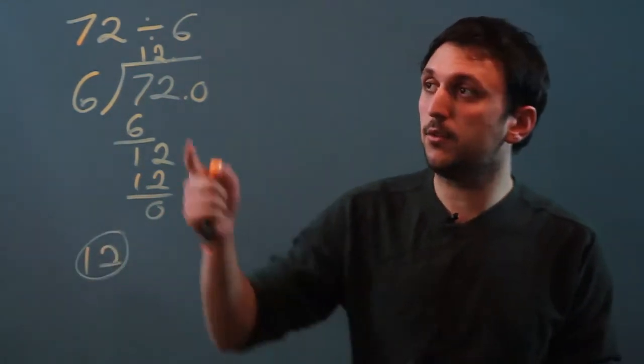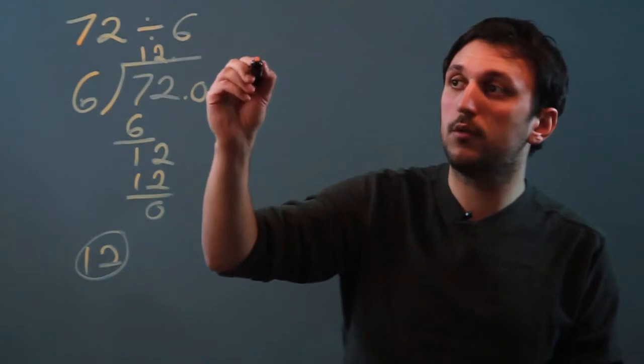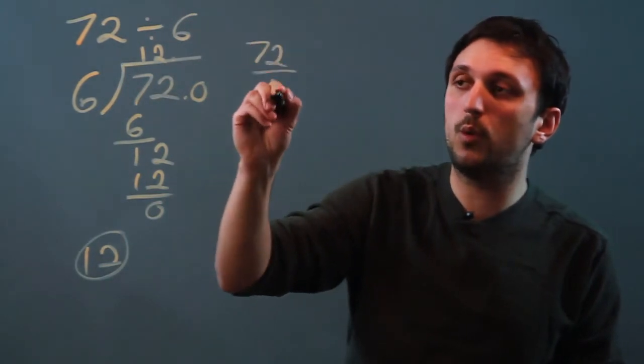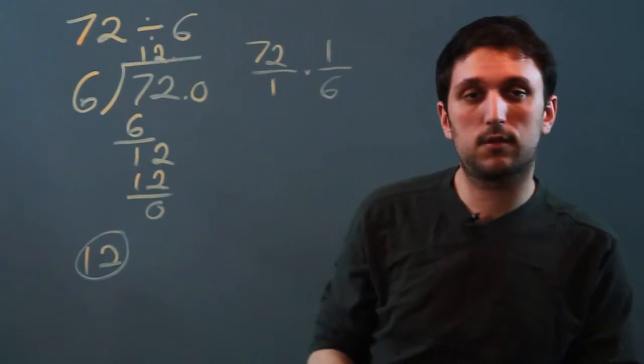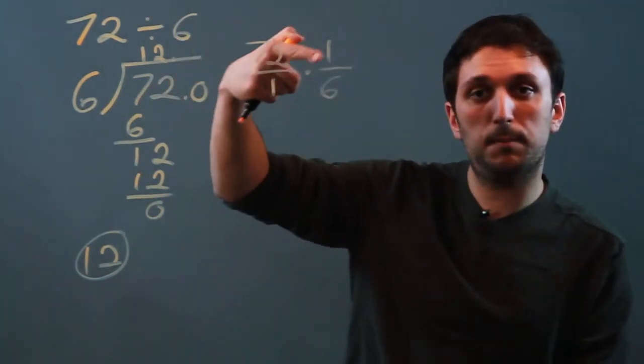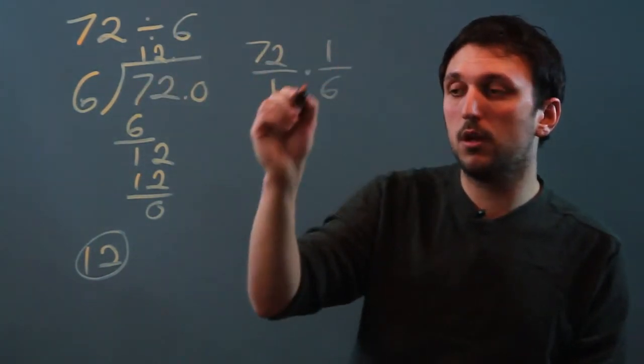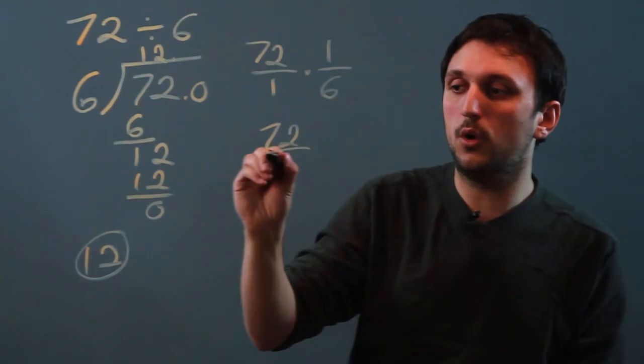Another way we can do that is we can multiply by the reciprocal. So we say 72 over 1 times 1 over 6. We take the 6 and we flip it and it's 1 over 6. So now we have 72 over 6.